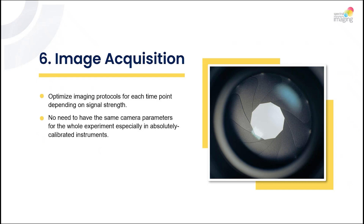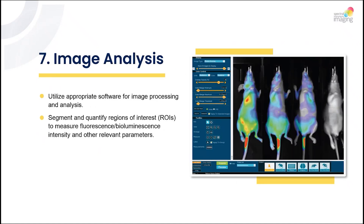Number six: image acquisition. Optimize imaging protocols for each time point depending on signal strength. There is no need to use the same camera parameters for the whole experiment, especially with absolutely calibrated instruments. If you are using a Spectral Instruments Imaging instrument, you can simply use easy mode as well.